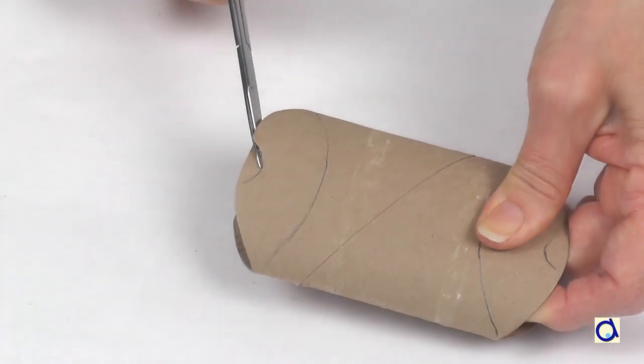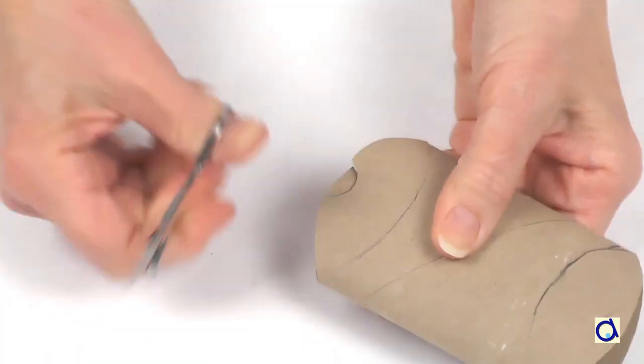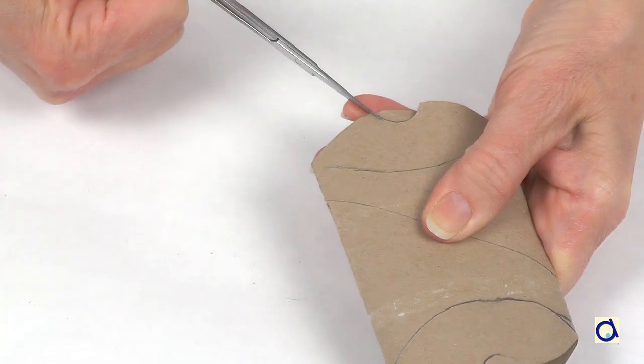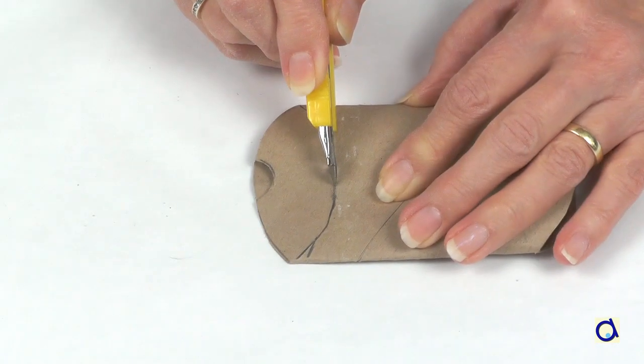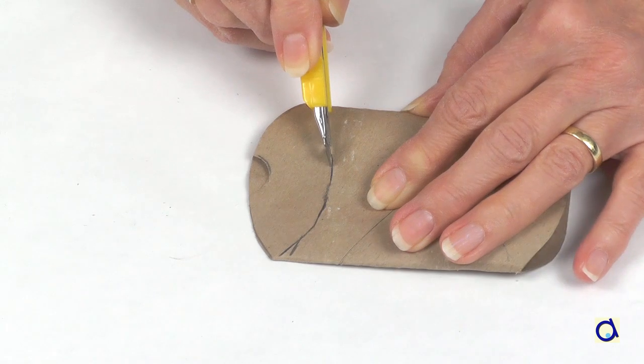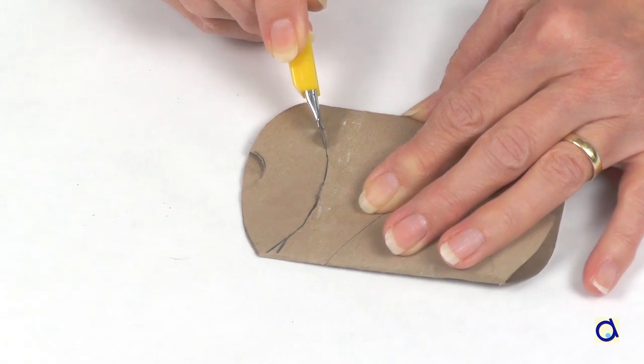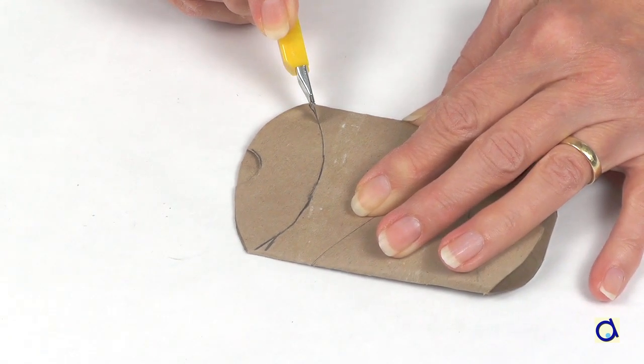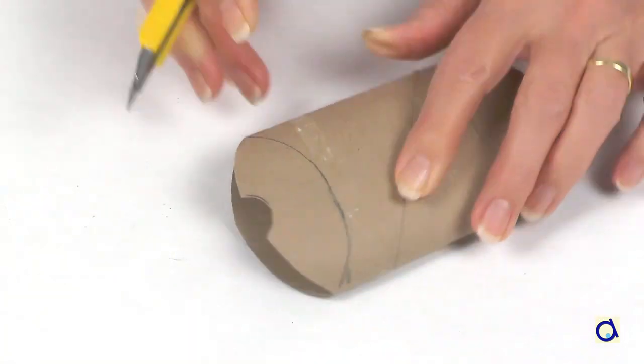Cut out the notches on each side of the roll but only on the top layer. Take an X-Acto knife and score the curved lines that you have drawn on each side of the toilet paper roll. So you will have to score four curves.